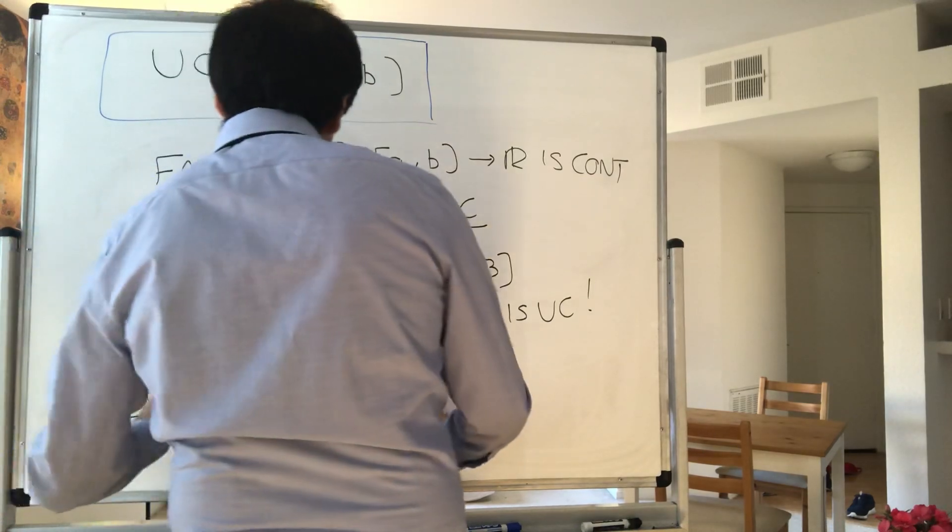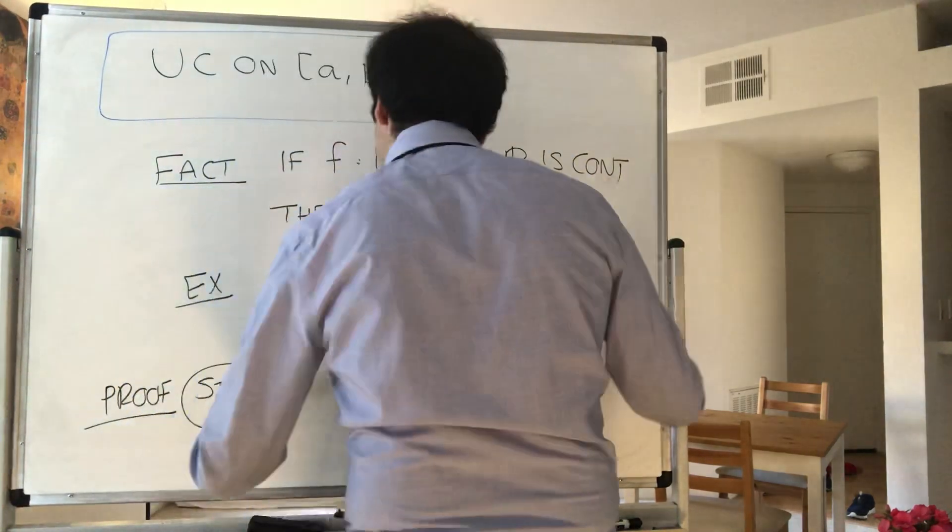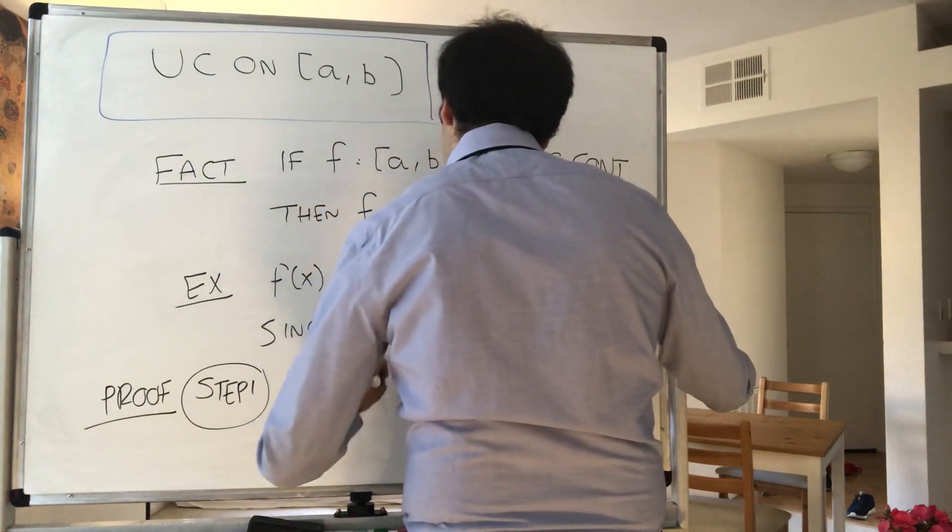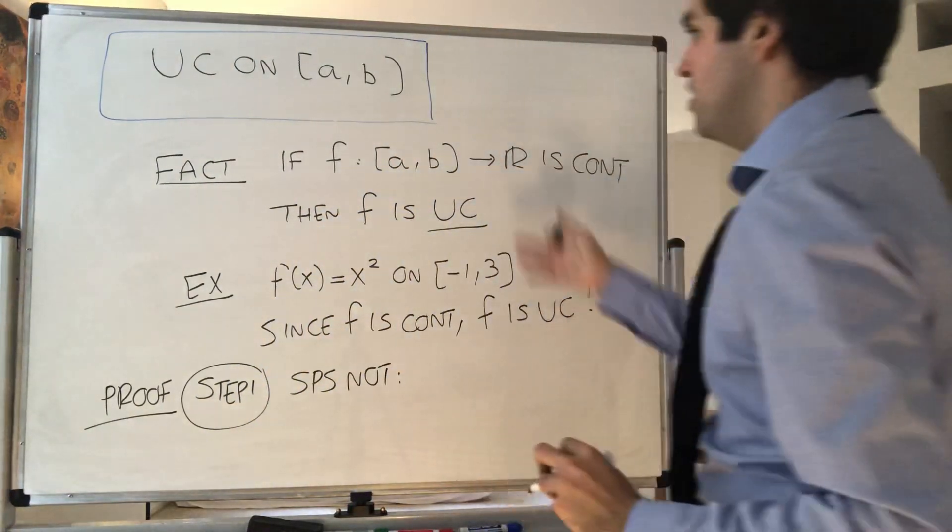So proof. Step one: suppose not. So suppose it's not uniformly continuous.